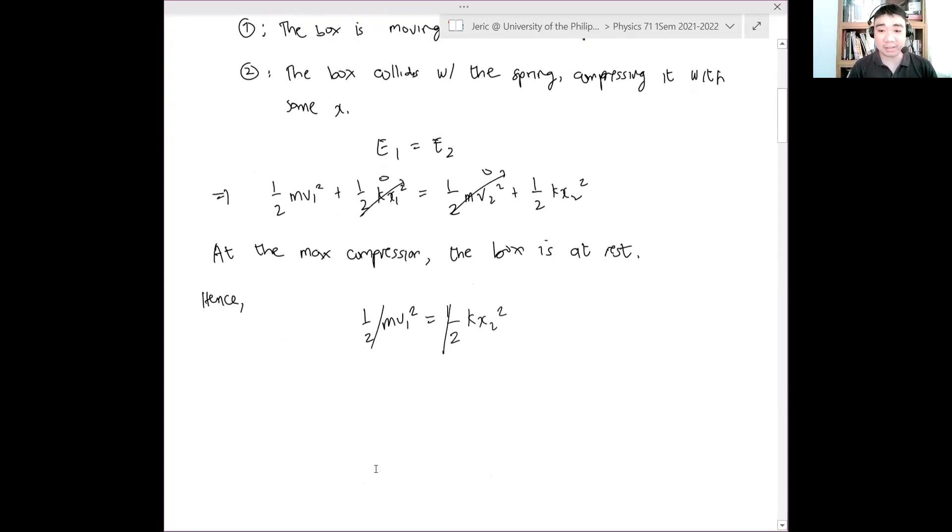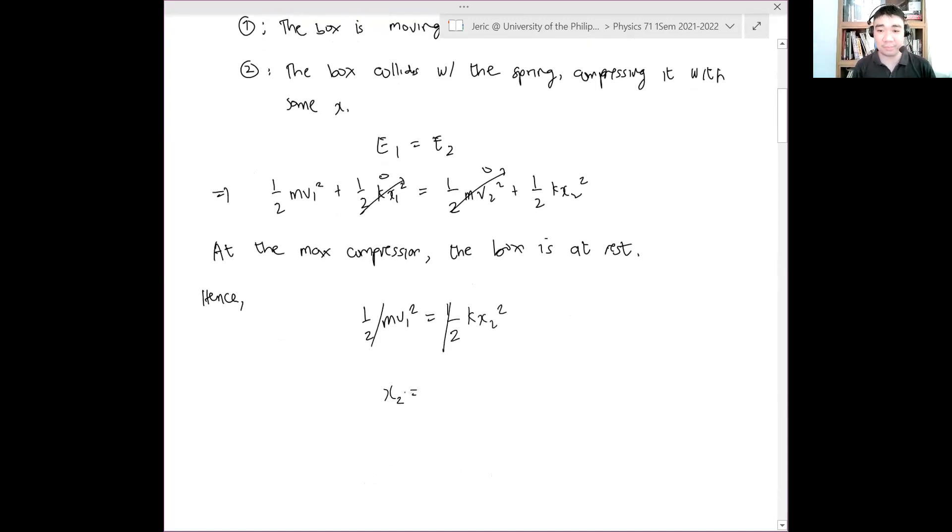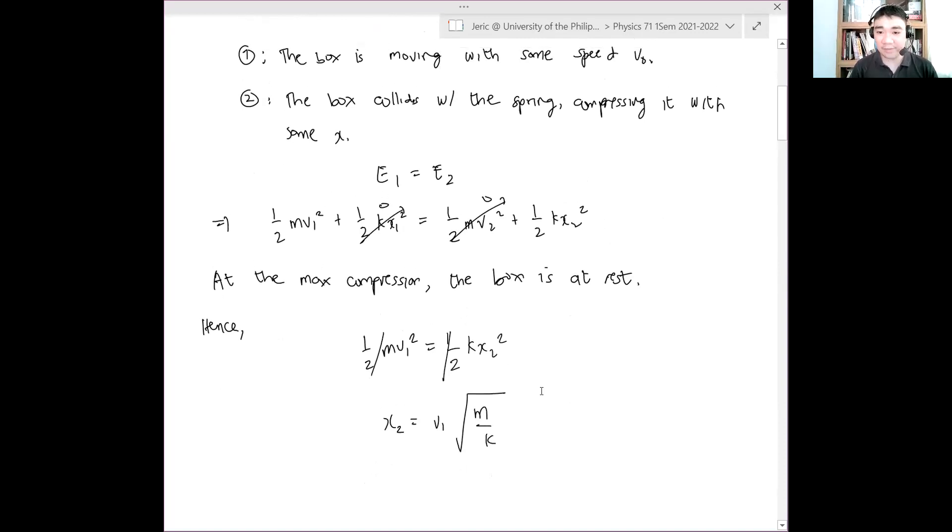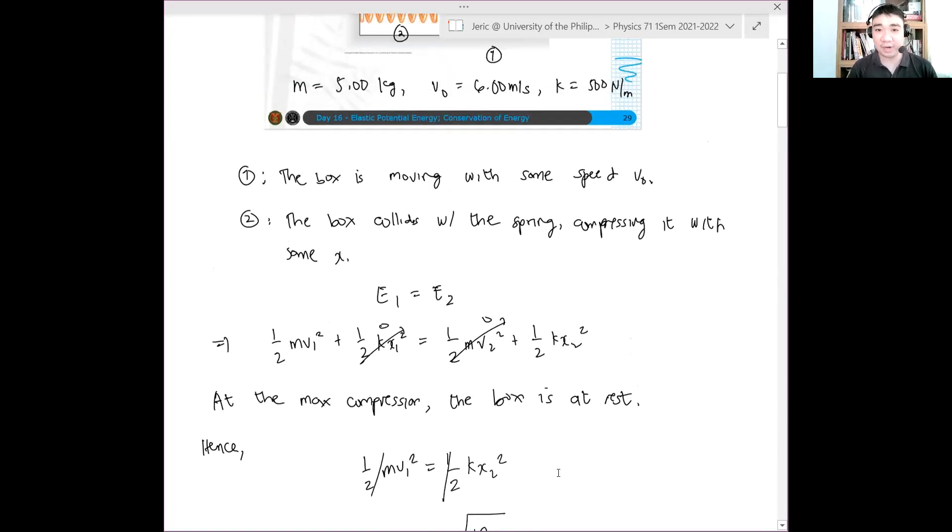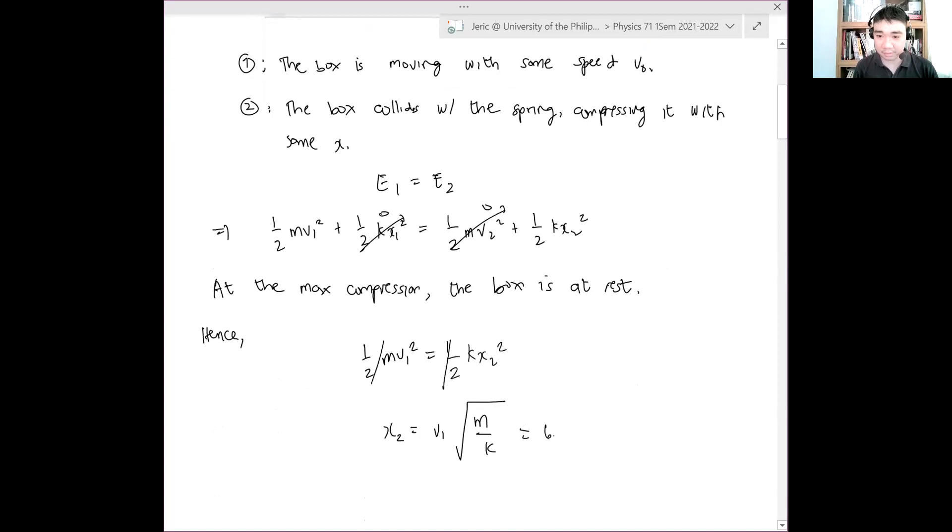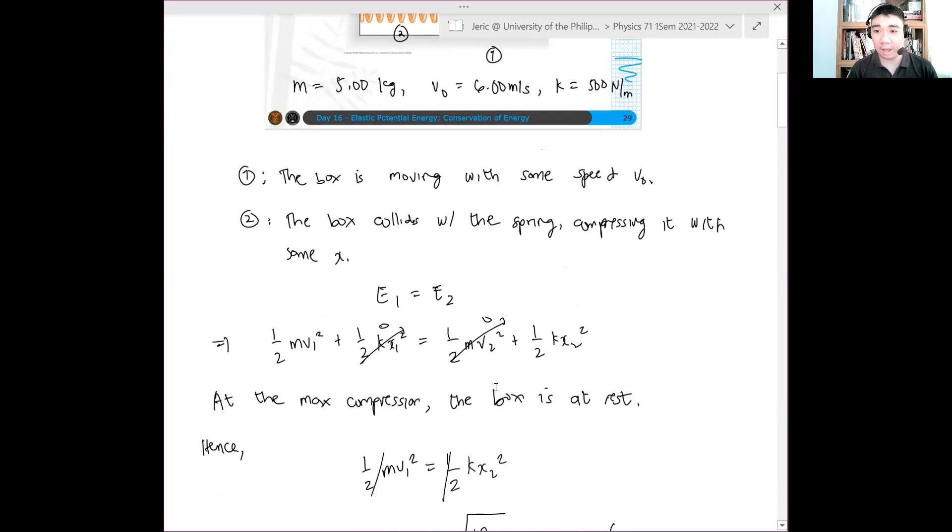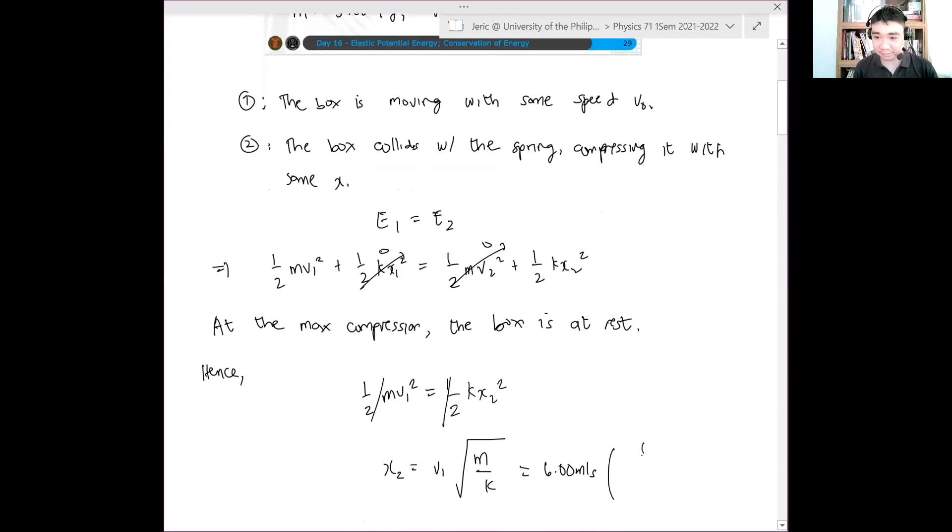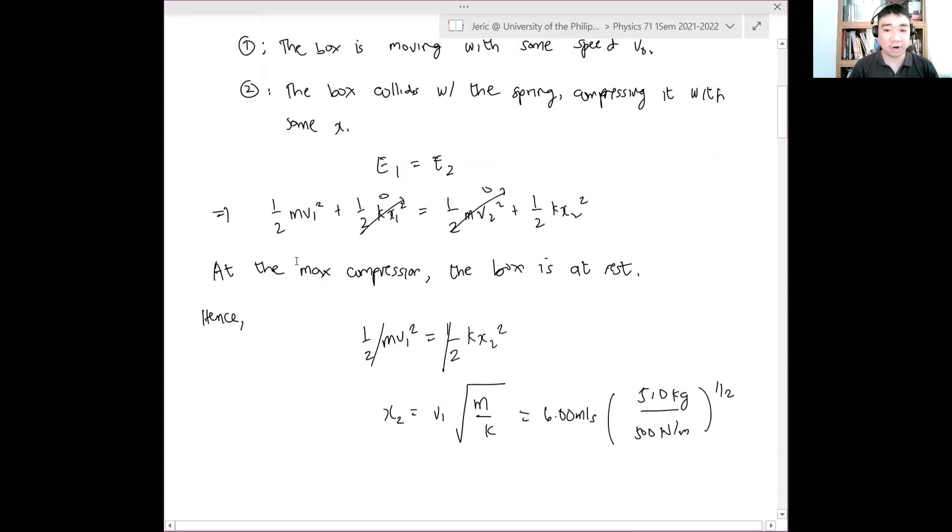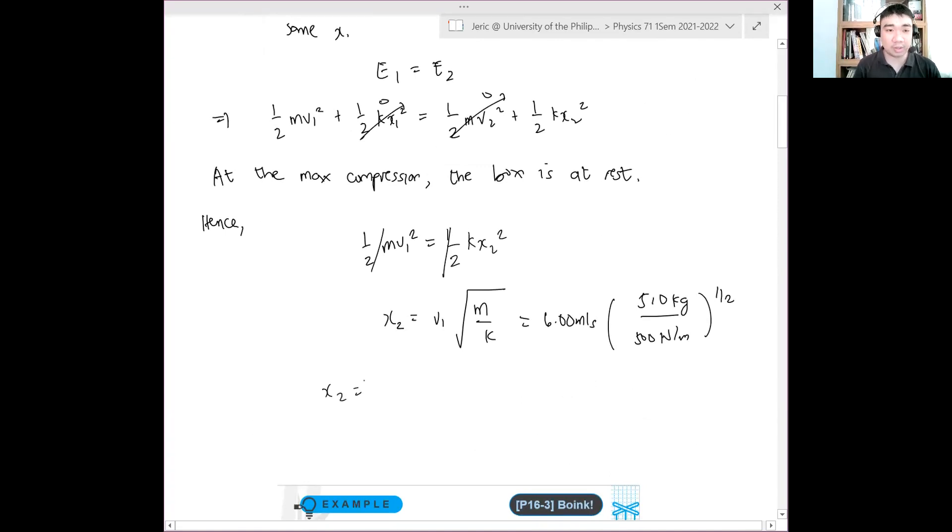The one-halves will cancel, and we will get something like x2, which is the maximum compression of the spring, is simply v1 times the square root of m over k. And we can plug in the values. This is just equal to 6 meters per second times the square root of 5 kilograms over 500 newtons per meter. And therefore, the final answer x2 is just equal to 0.6 meters.